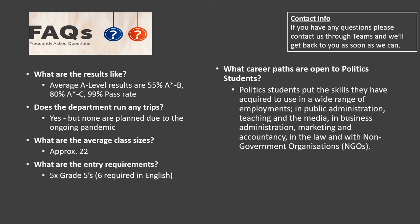Having gone over the content, here are some frequently asked questions. What are the results like? The last two years have been different due to COVID-19 with teacher-assessed grades, but going back to 2018, 2017, 2016, and 2015, our average A-level results have been 55% A-star to B. So more than half of our students on average have received A-star, A, or B grades. 80% have received A-star to C grades, with a 99% pass rate — well above the national average.